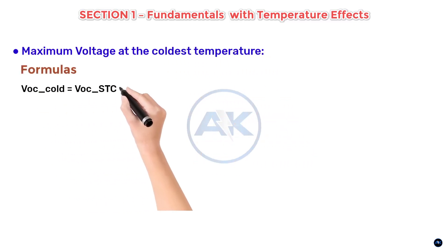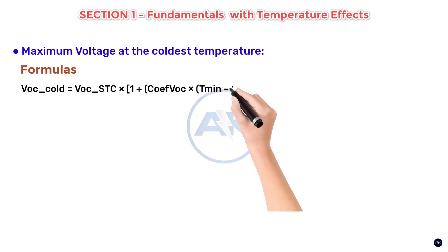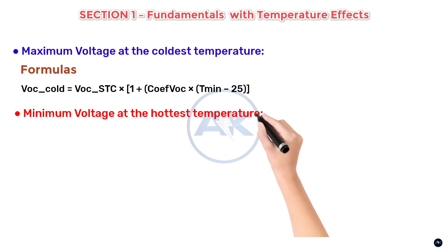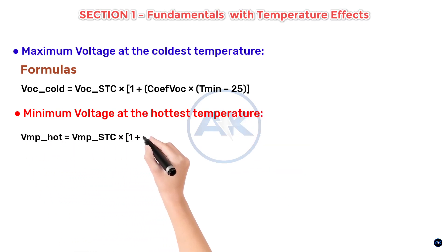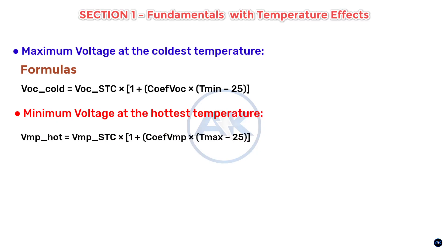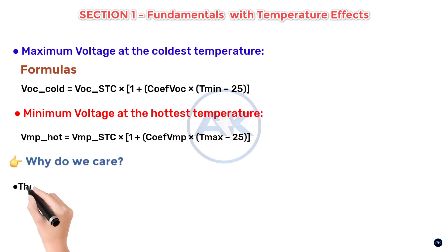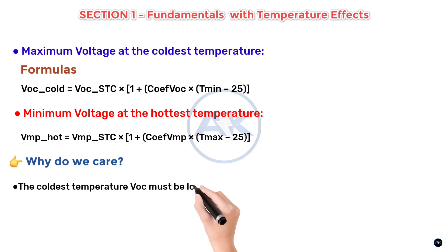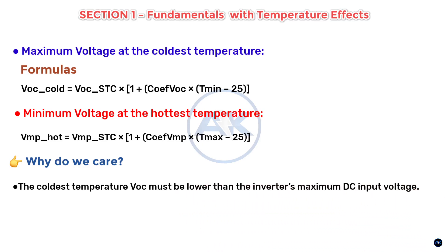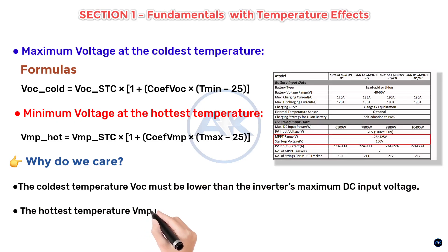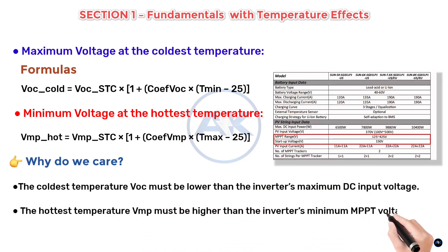Maximum voltage at the coldest temperature: VOC_cold = VOC_STC × (1 + coefficient × temperature difference). Minimum voltage at the hottest temperature: VMP_hot = VMP_STC × (1 + coefficient × temperature difference). This is important because at the coldest temperature, VOC must stay below the inverter's maximum DC input voltage, and at the hottest temperature, VMP must stay above the inverter's minimum MPPT voltage. Skip these checks and your inverter could shut down on hot days or be destroyed on freezing days.